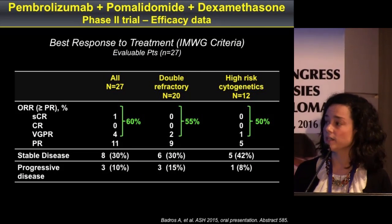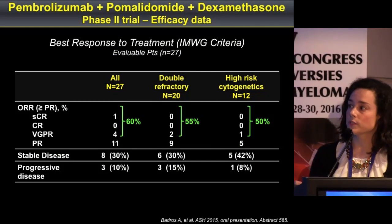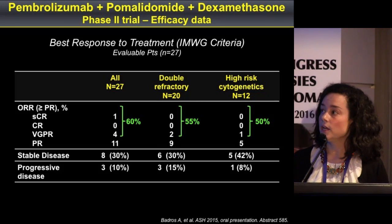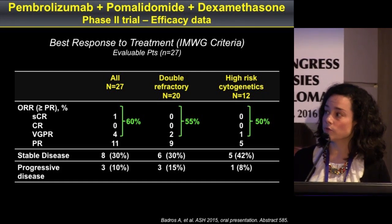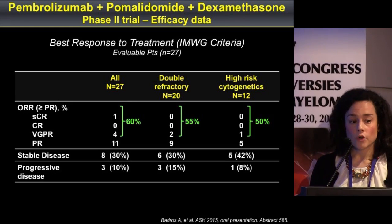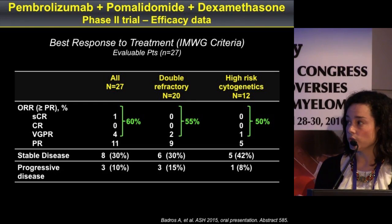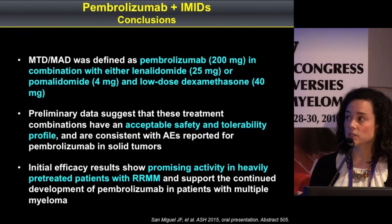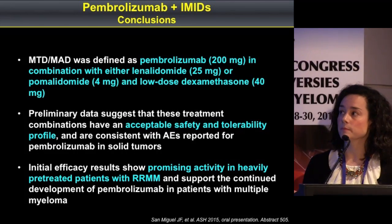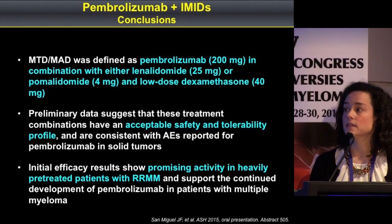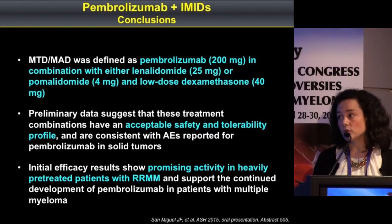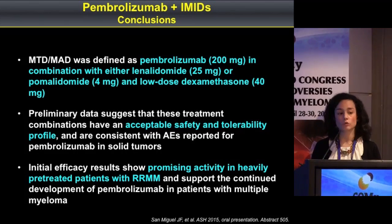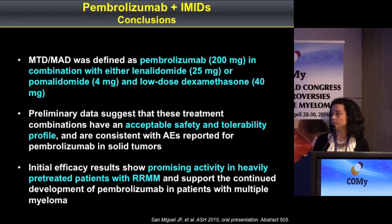These are the responses: in the 27 evaluable patients, the overall response rate was 60%. In patients who were double refractory, there was an encouraging 55% overall response rate. In conclusion, the combinations of pembrolizumab with IMiDs are overall tolerable with an adequate safety profile and with promising activity, although the data is still immature.